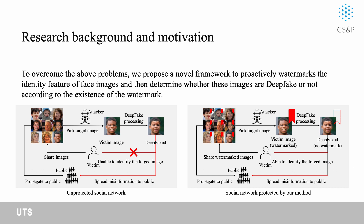To overcome the above problems, we propose a novel framework to proactively watermark the identity feature of the fake images and then determine whether these images are fake or not according to the existence of the watermark. The figures below show how to deploy our method. Before sharing personal images online, users can use our method to embed their watermark into these images. The watermark acts as a deepfake label to protect the authenticity of these images. Once images with similar identity to the watermarked images appear online, the owner can verify the suspect images' authenticity according to the existence of their watermark.